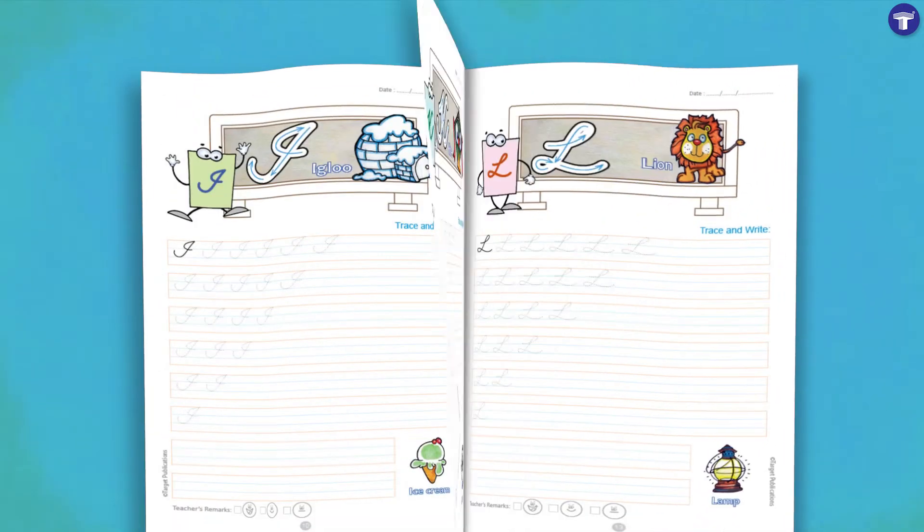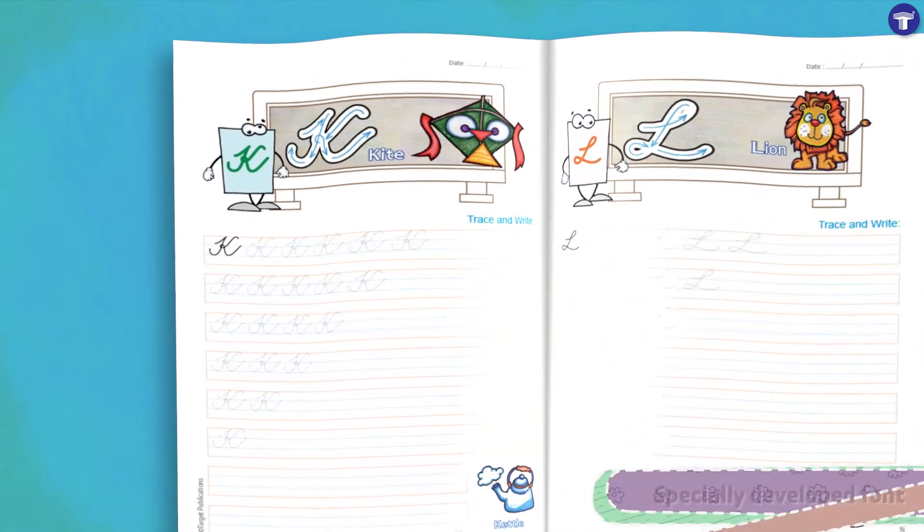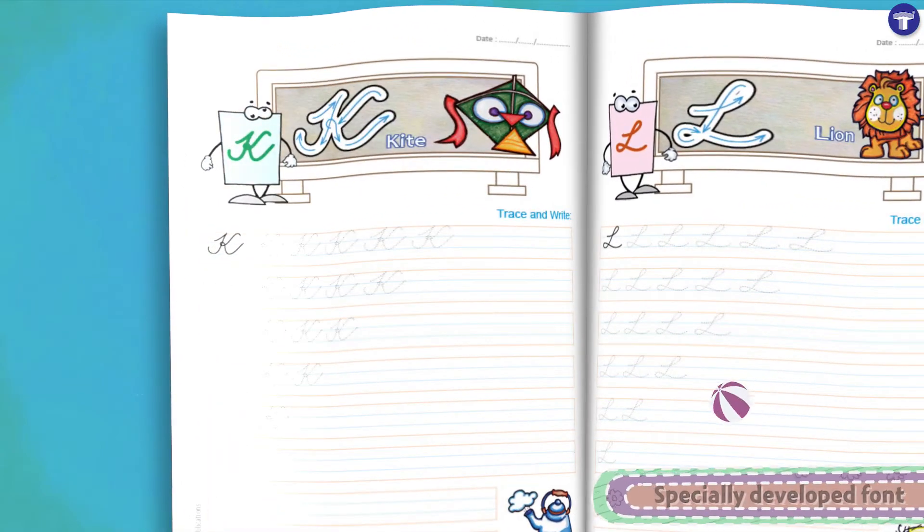Cursive Practice Book A is the first introduction to cursive writing with specially developed font and instructions to write each letter.